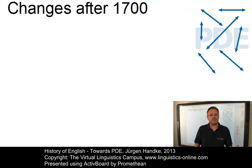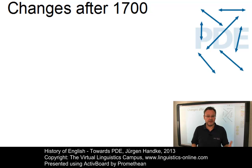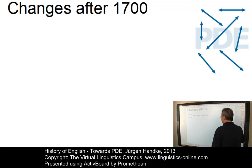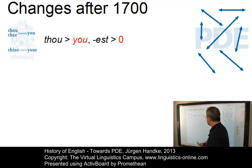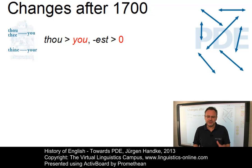The main linguistic properties of present-day English had been manifested by the end of the early modern English period. The changes that had begun during the Middle English period were by and large completed. Second-person singular forms, along with the pronouns thou and thee, had disappeared from ordinary educated speech.